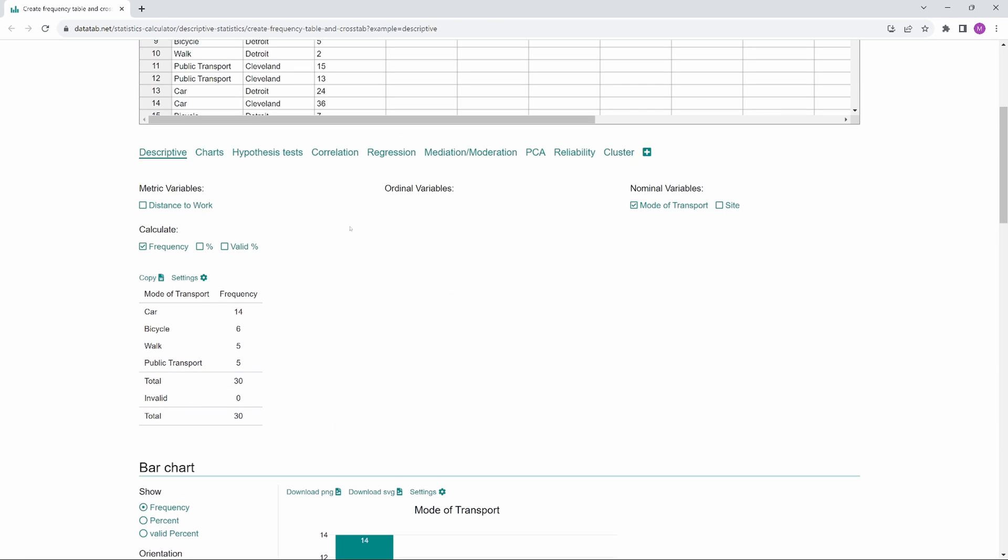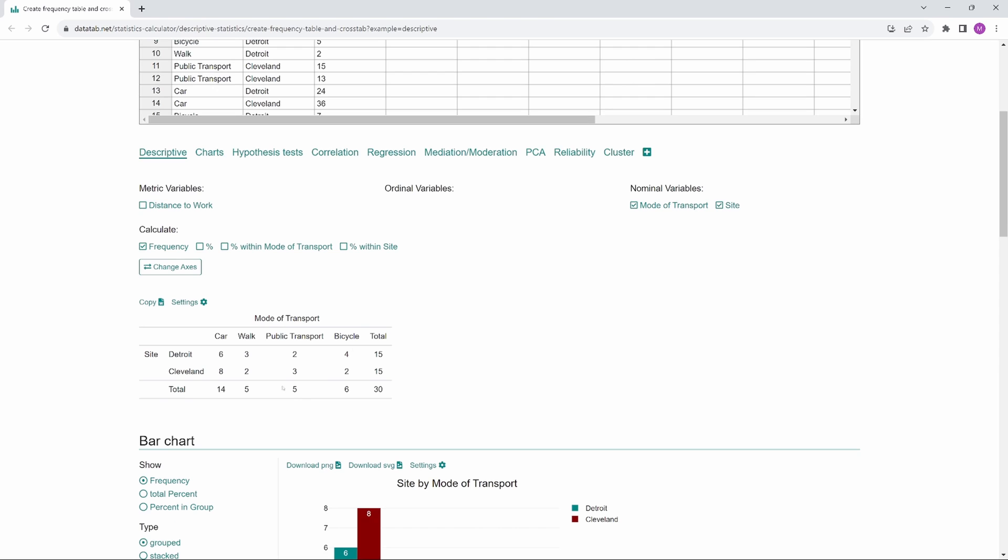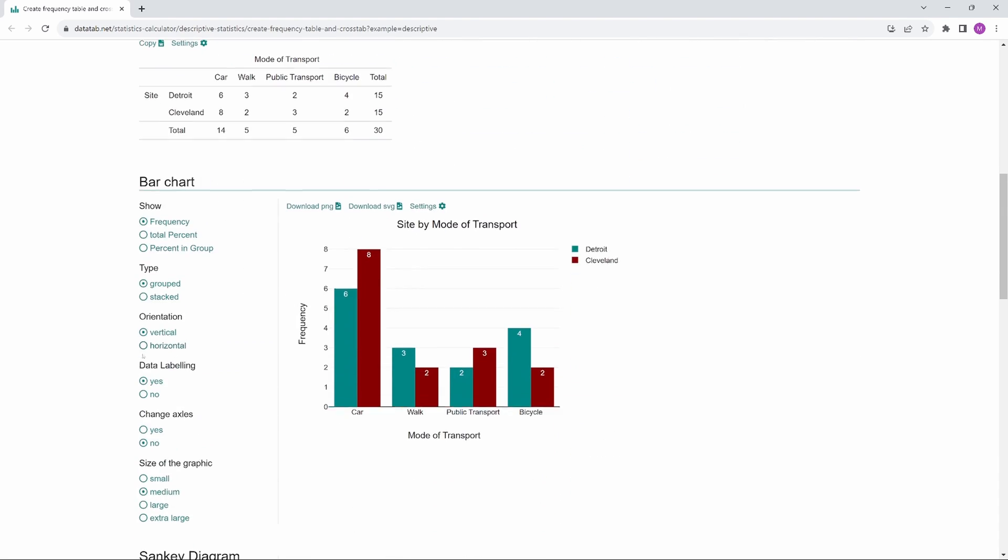If we also select site, we get a cross table here and a grouped bar chart for the diagrams. Here we can specify whether we want the chart to be grouped or stacked.